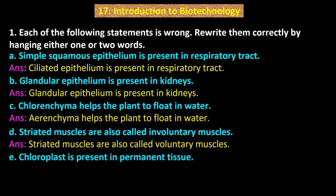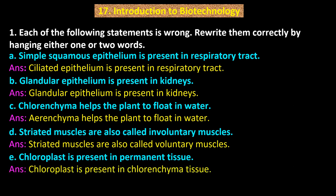Point E: Chloroplast is present in permanent tissues. Answer: Chloroplast is present in chlorenchyma tissue.